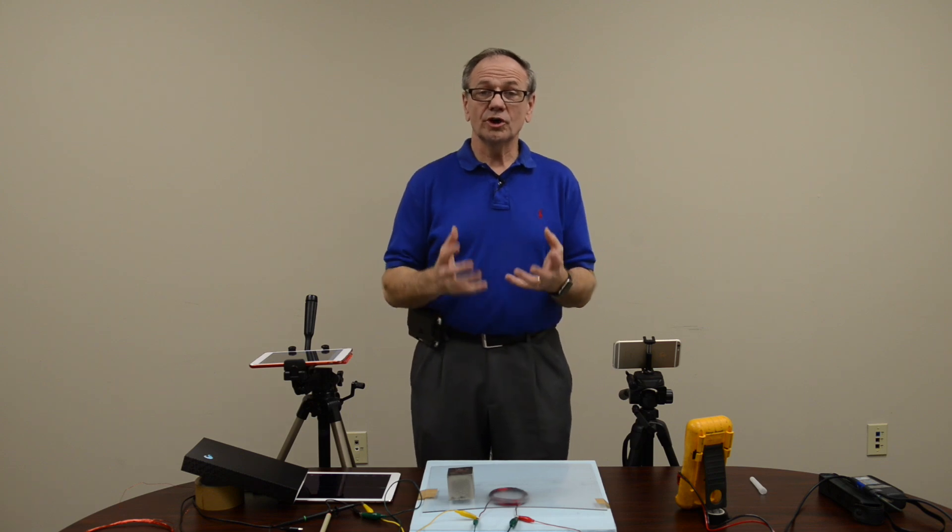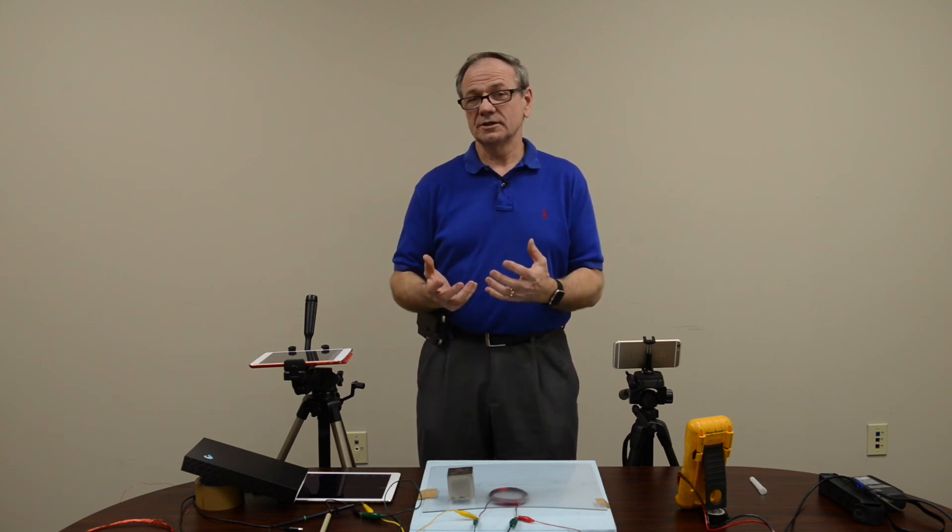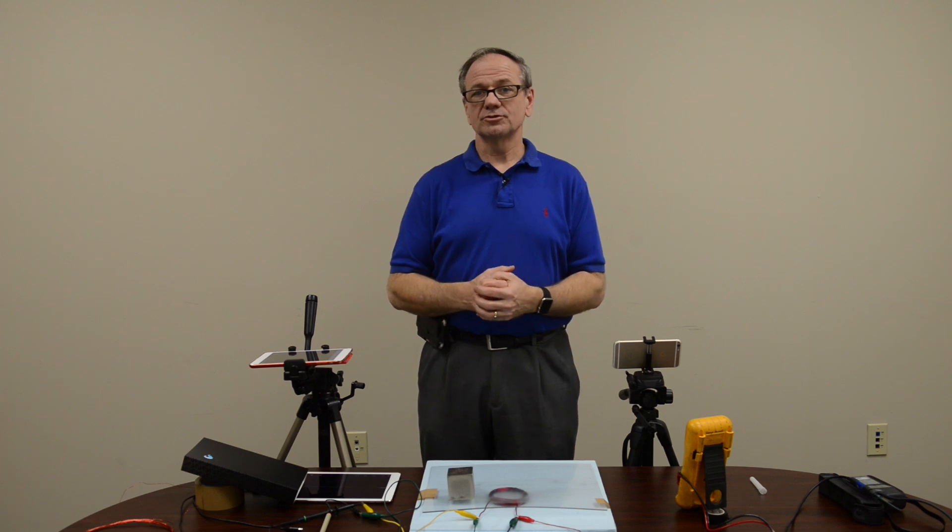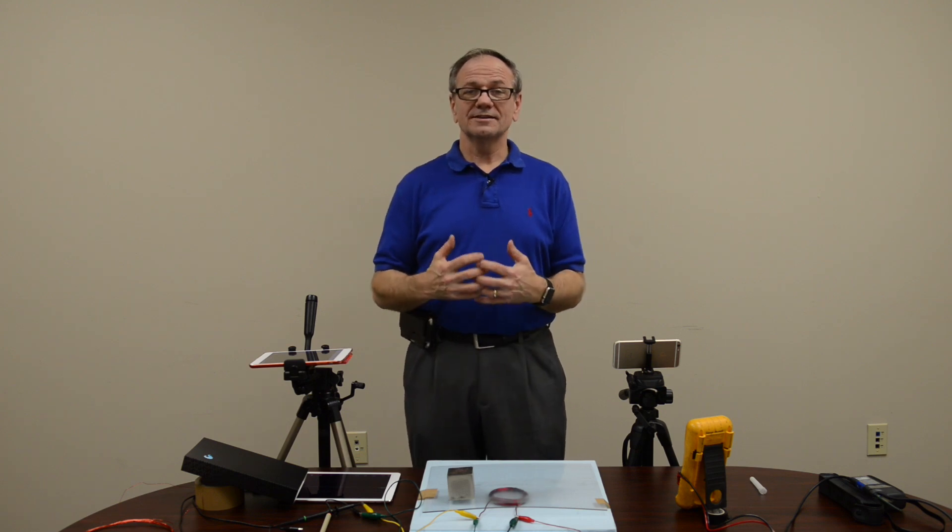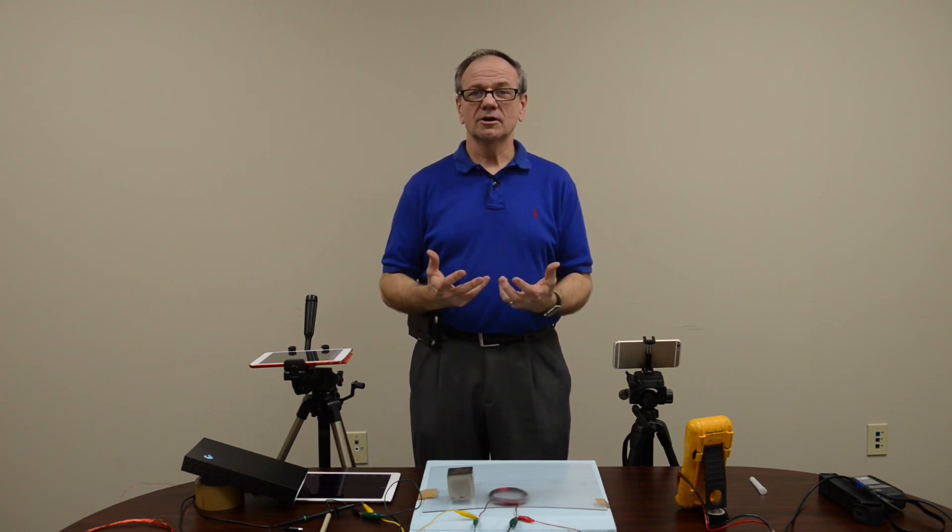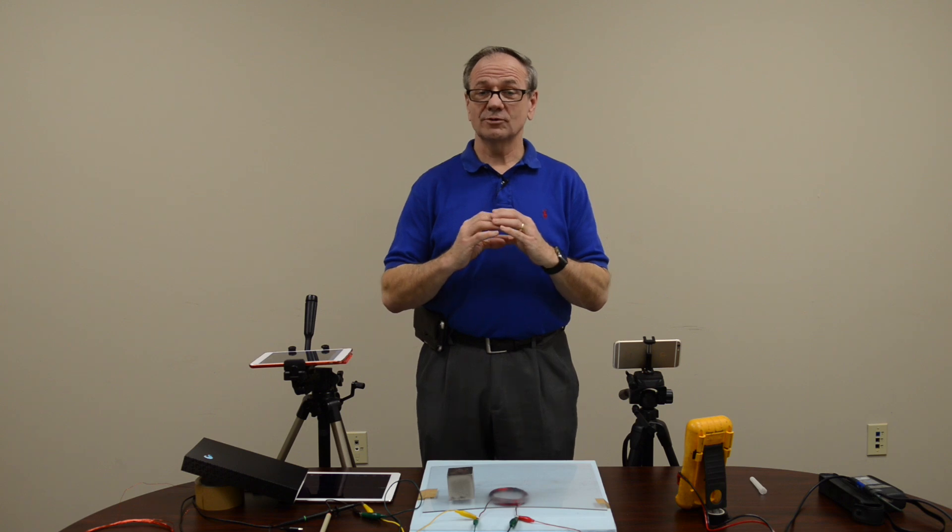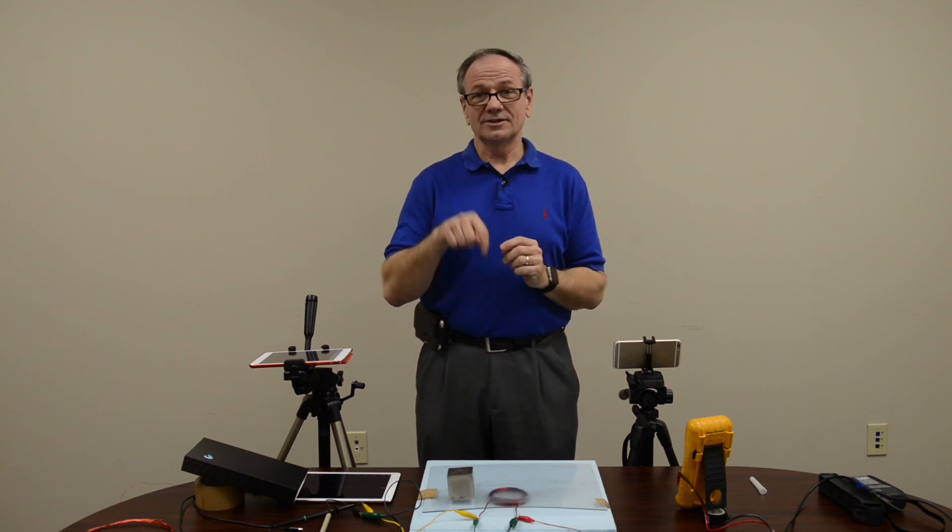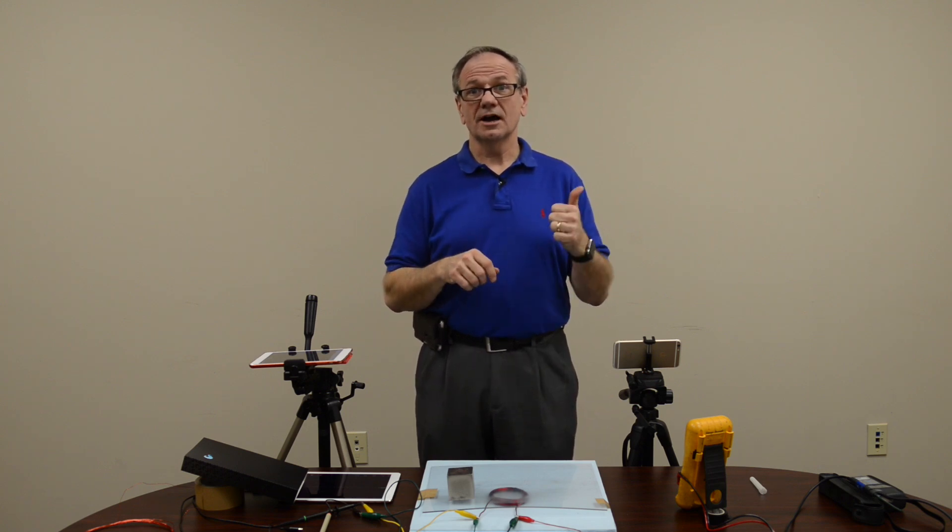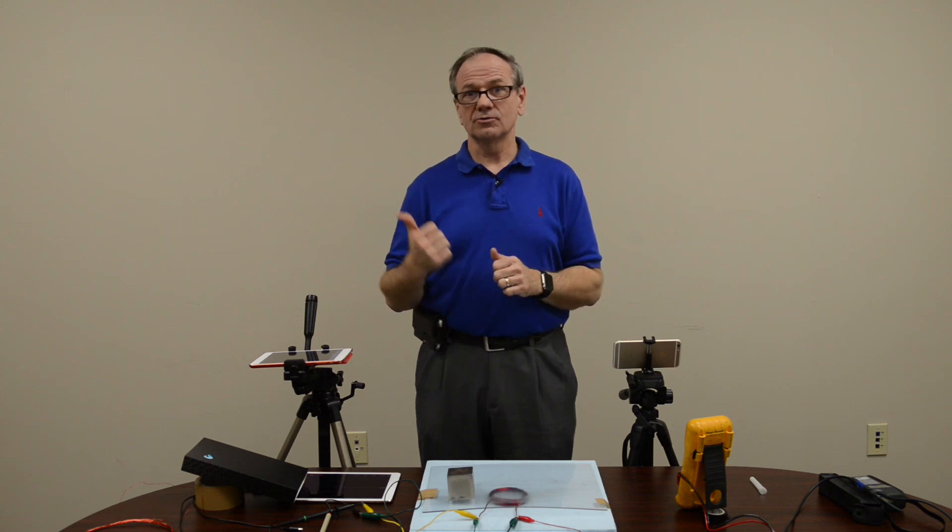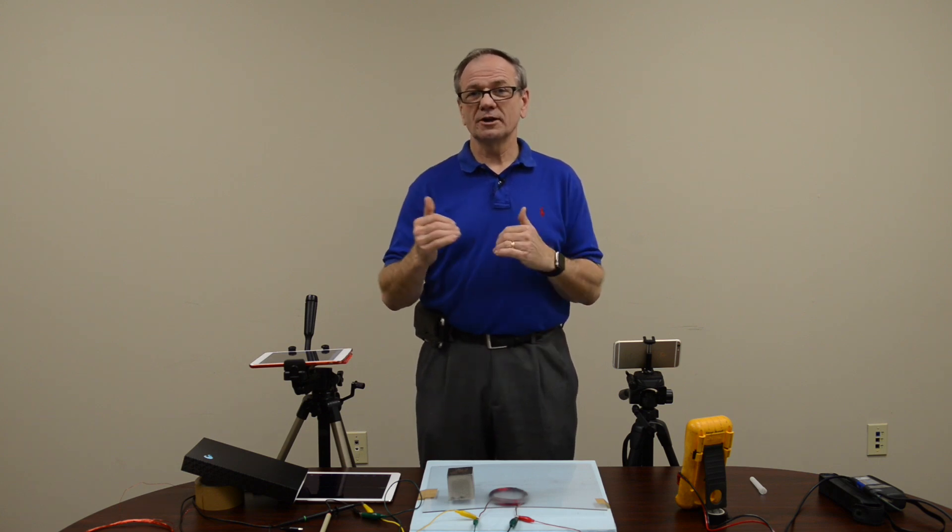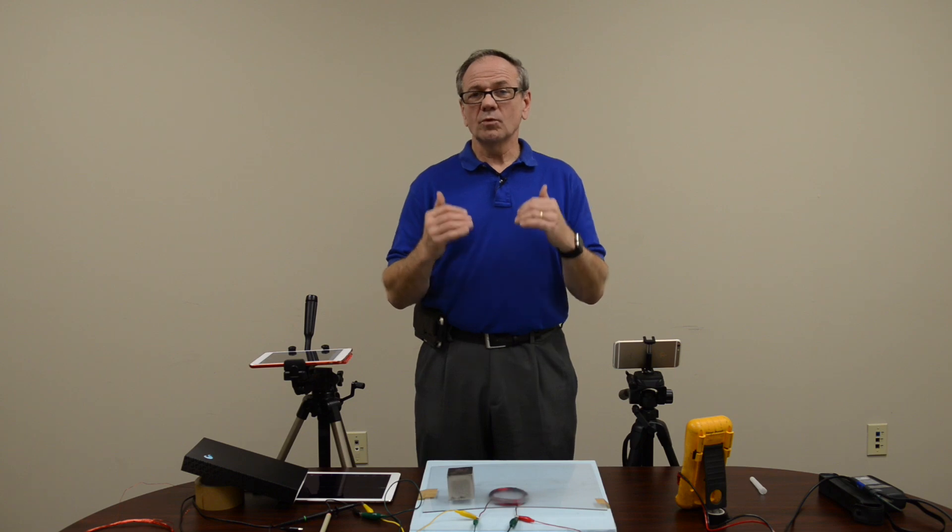Now we're going to look at another variable that we deal with in designing the best alternators and motors. That is the size of copper wire. One of the fundamentals about copper wire is resistance. The larger the diameter of the wire, the less the resistance. But the higher the cost, the higher the weight. So there has to be a trade-off to give us the best.